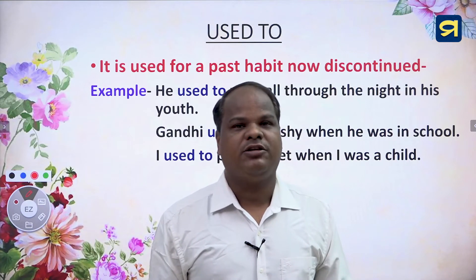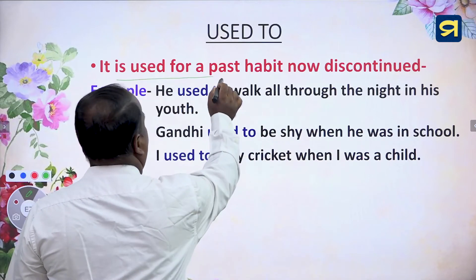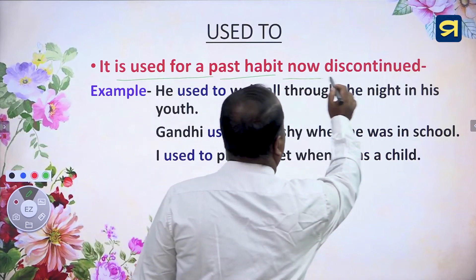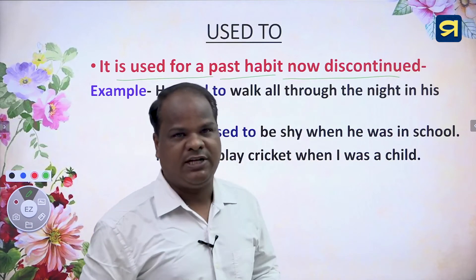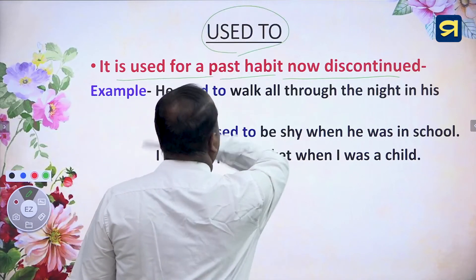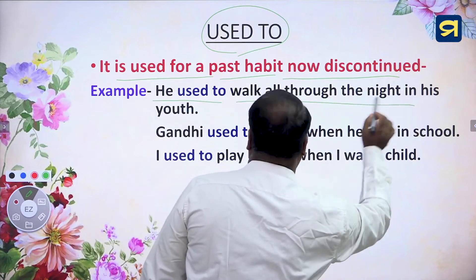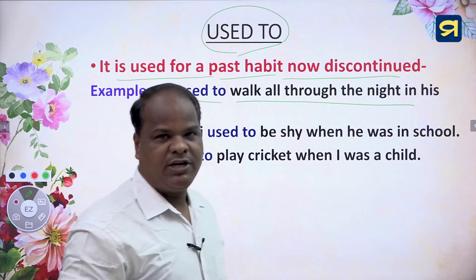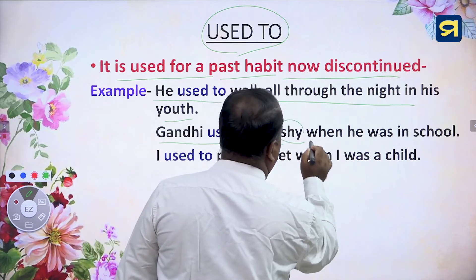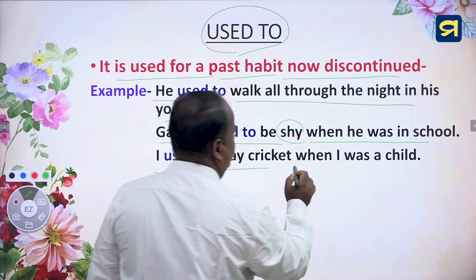'Used to' is used for a past habit which is now discontinued. For example, 'He used to work all through the night in his youth' — a past habit, now discontinued. Another example: 'Gandhi used to be shy when he was in school.' And: 'I used to play cricket when I was a child.'